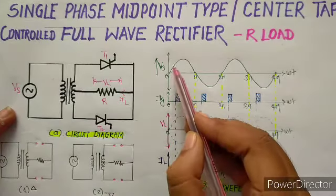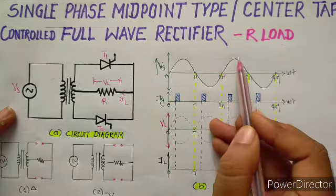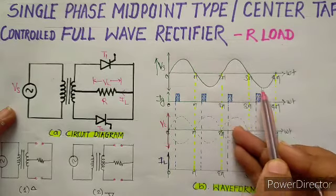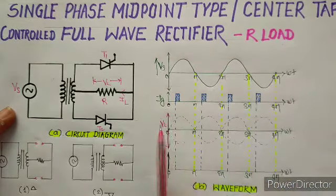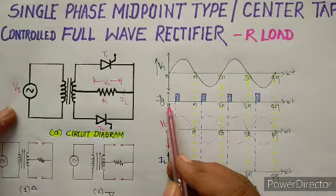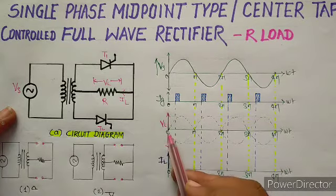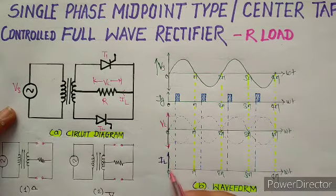We will draw four waveforms: first, the input supply waveform which is sinusoidal in nature; second, the gate current waveform; third, the load voltage waveform; and the fourth, the load current waveform.